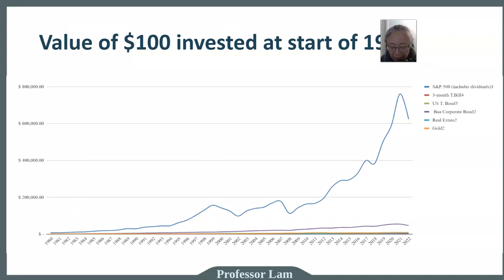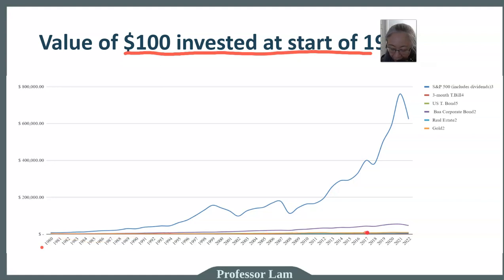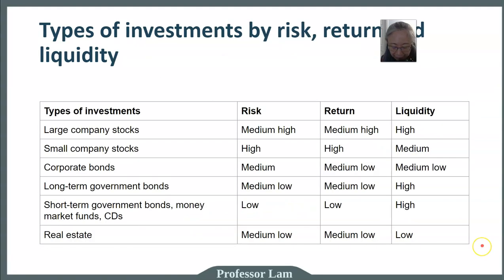Now let's look at investment returns over time. This graph shows the value of one hundred dollars invested at the beginning of 1928 all the way through 2022. The S&P 500 is the most volatile — it goes up and down — but it still generates the highest return. It definitely carries the highest risk because in any given year you can experience large swings. The other investments are less risky but also do not generate much return over time.